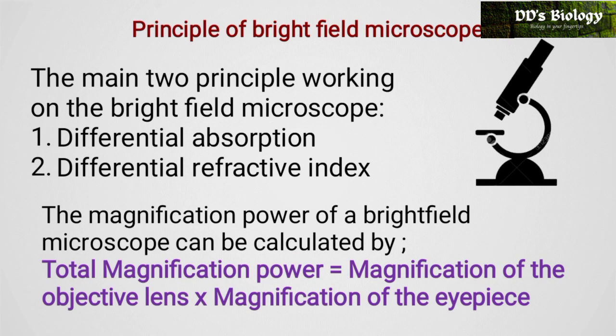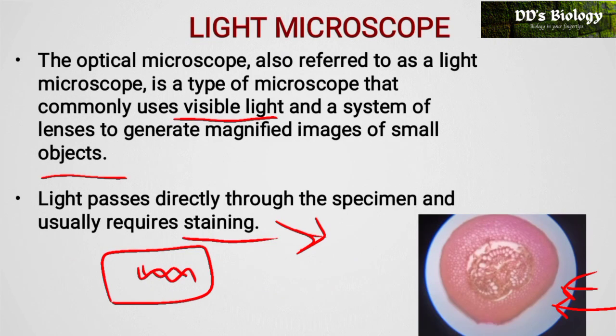What is the principle of the bright field microscope? The main principles are differential absorption and the differential refractive index. When we apply a stain, some amount of light is absorbed by the specimen and a lower amount of light is emitted, which is why the specimen appears dark.